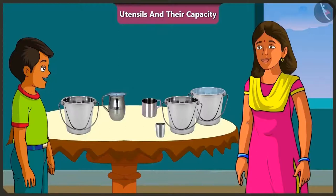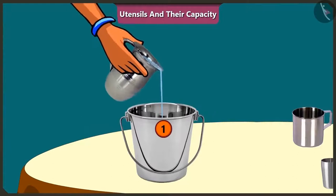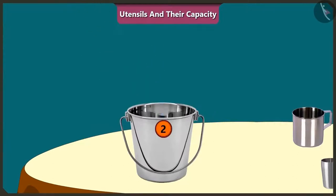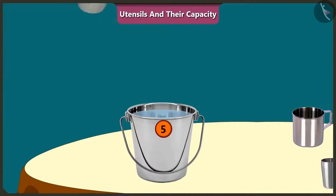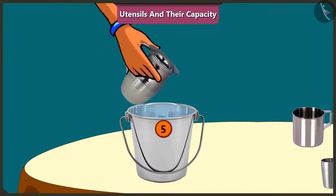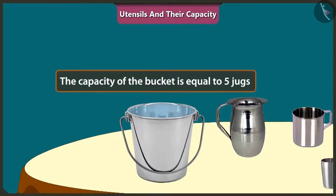Let's try filling this bucket with this jug. One, two, three, four, five. The whole bucket got filled with just 5 jugs of water. This means the capacity of this bucket is equal to 5 jugs of water.